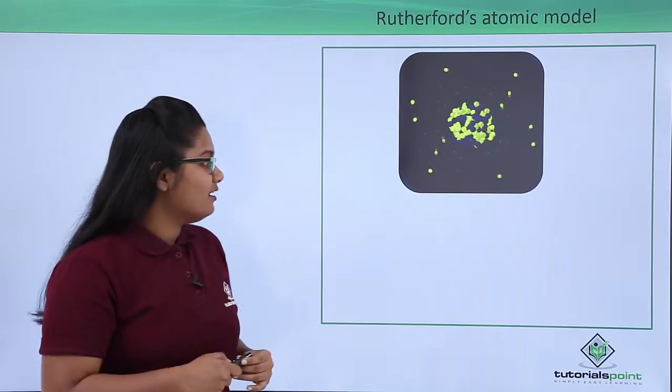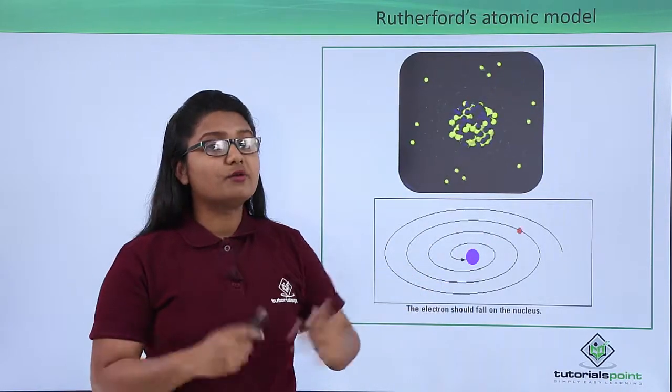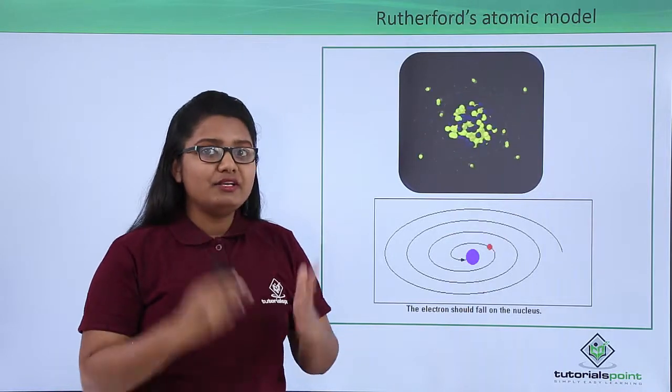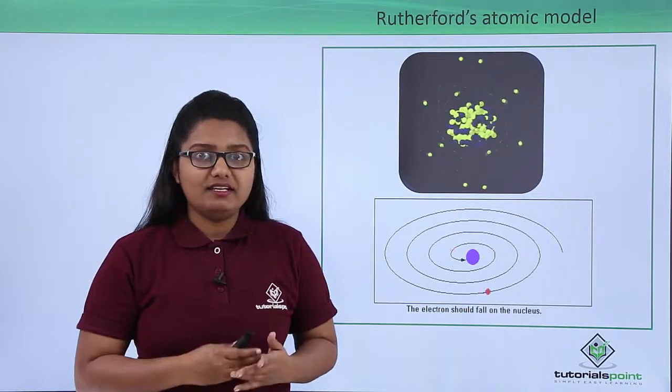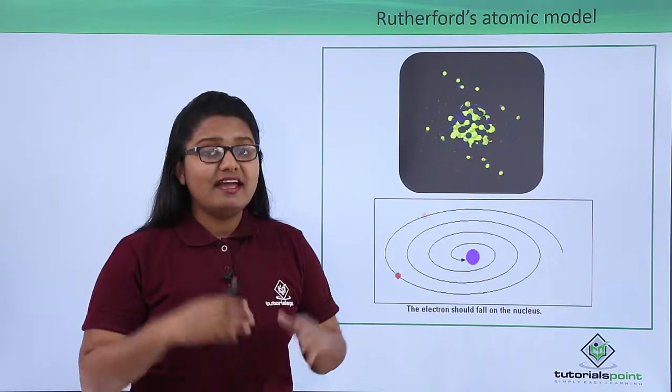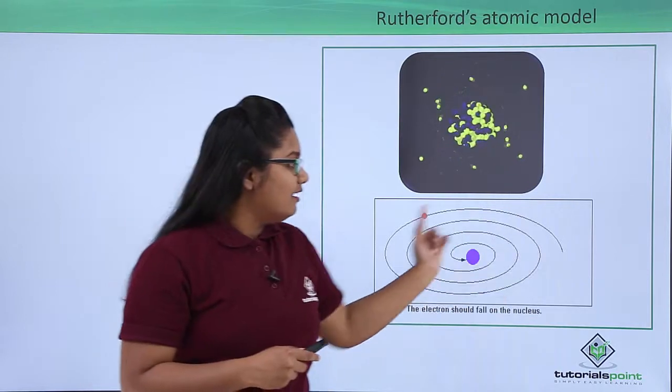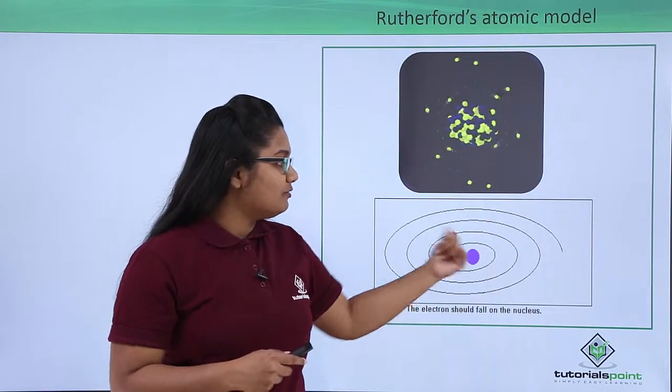What was that? The electron revolves around the nucleus in a circular path, and we know that any charged body in circular motion accelerates and hence radiates energy.